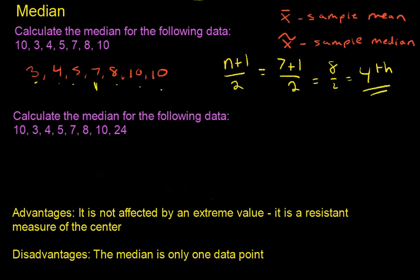So the fourth observation is the median. So 1, 2, 3, 4. The fourth observation is the median, so that's 7. So the median in this data is 7.